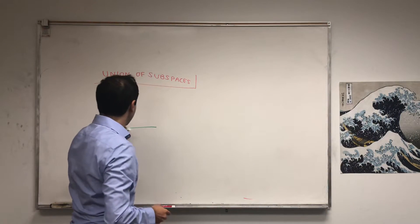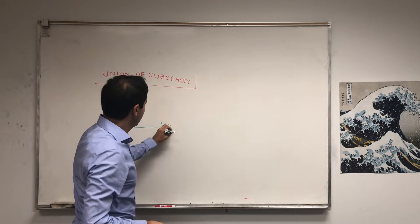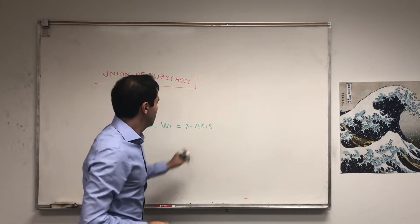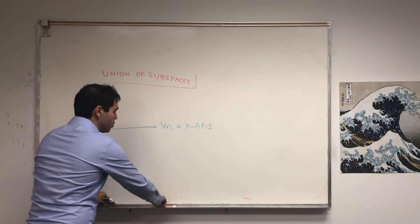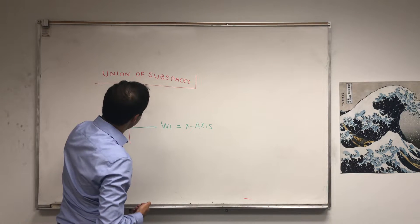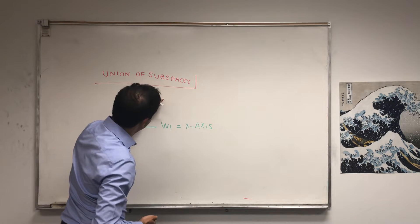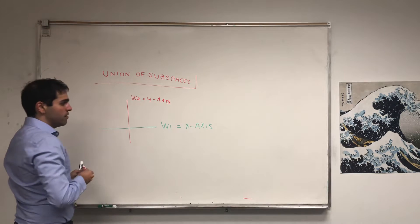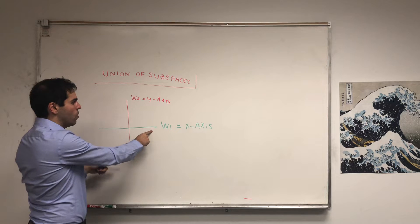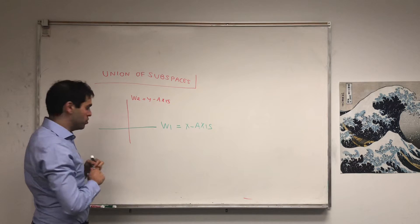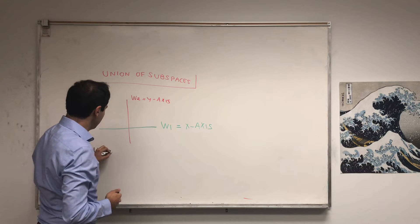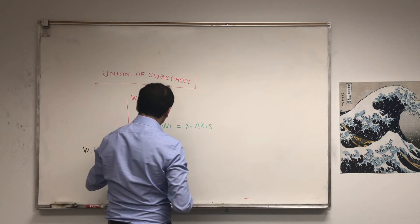Suppose W1 is the x-axis in R2, and W2 is the y-axis in R2. Then, if you take the union, which just means a set of elements where one is in W1 or in W2, this is not a subspace. So W1 union W2 is not a subspace.